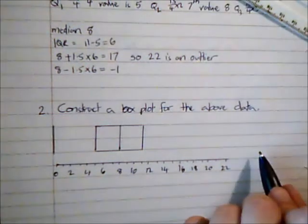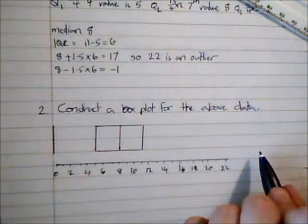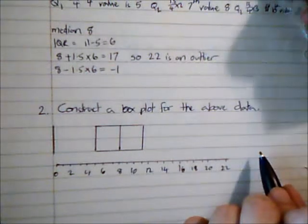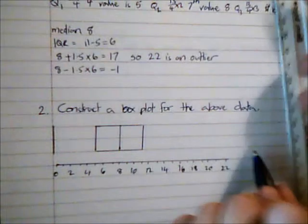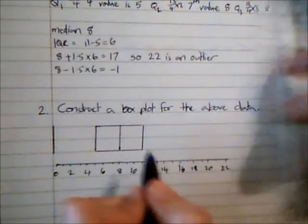And then the highest value is the highest value which is not an outlier. So I don't mark on the 22. I mark on the second highest, which was 14.